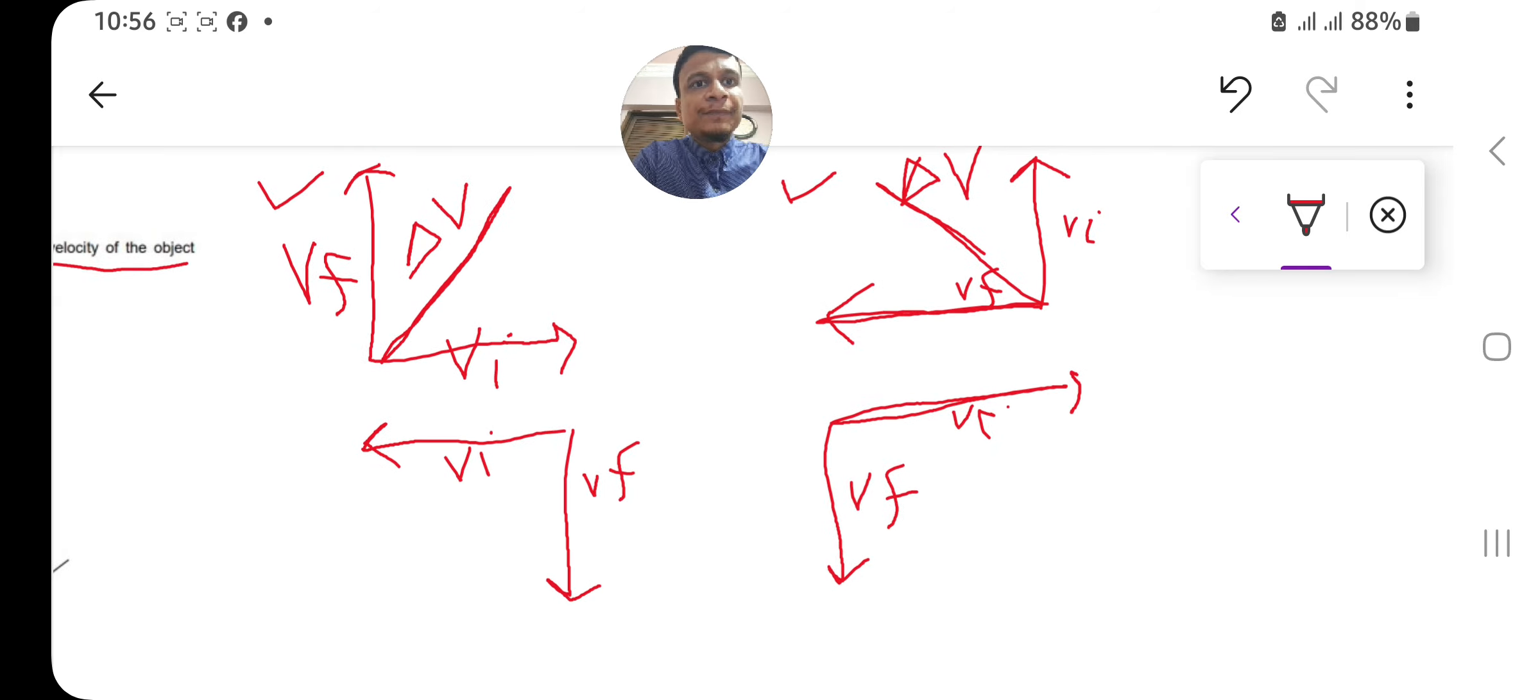and final velocity downward, and you have this as the change in velocity or the resultant velocity. Right now just match it out. Here you have Vi on the right and Vf on the left. If I make this, you will easily understand